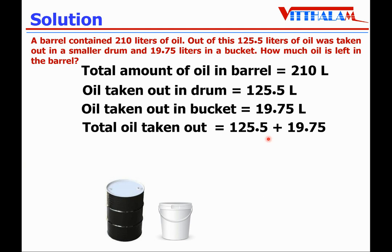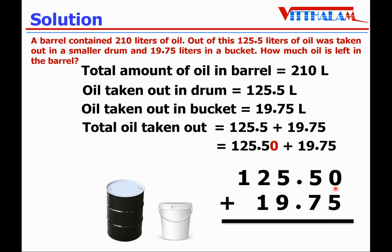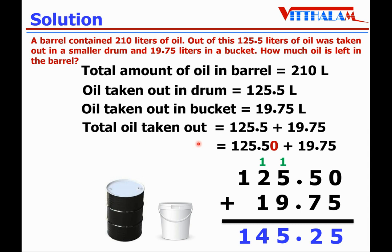Make them like decimals: 125.50 plus 19.75. Right to left: 0 plus 5 is 5, 5 plus 7 is 12 — write 2, carry 1. Put the decimal point. 5 plus 9 plus 1 is 15 — write 5, carry 1. 2 plus 1 plus 1 is 4. Then 1. So the total oil taken out in the smaller drum plus bucket is 145.25 liters.